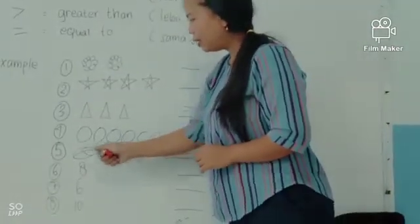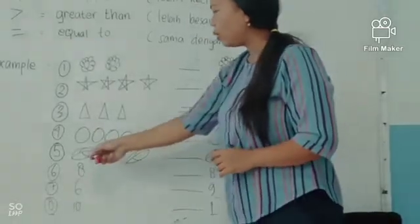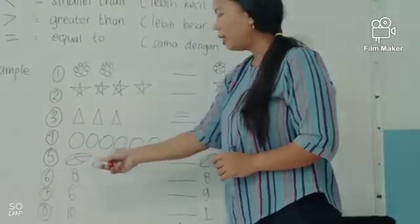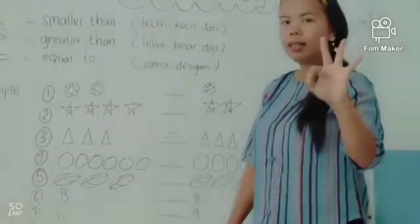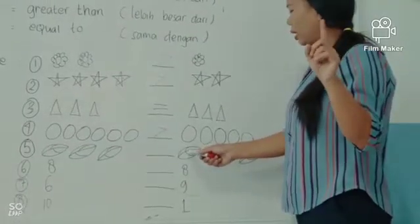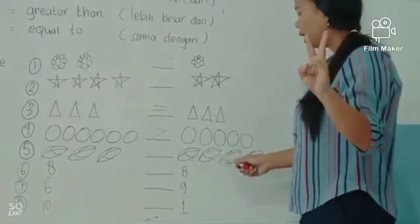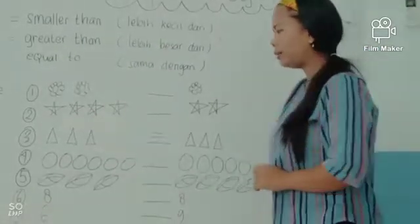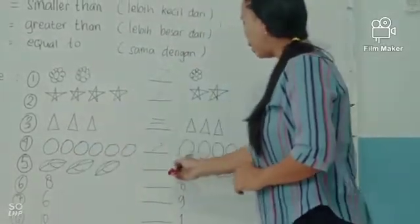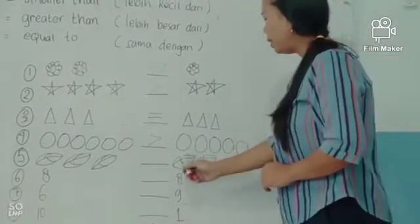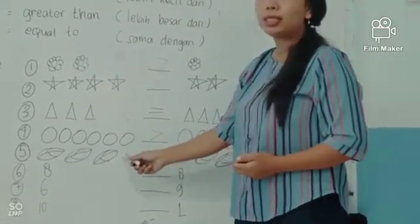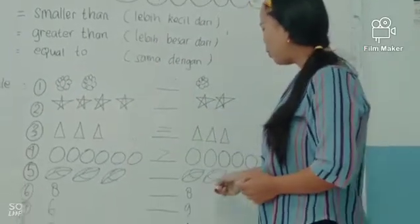Look at this. This is the leaves. In the left side, there are one, two, three — there are three leaves. In the right side, there are one, two, three, four — there are four leaves. So three leaves in the left side and there are four in the right side. Three is smaller than four.